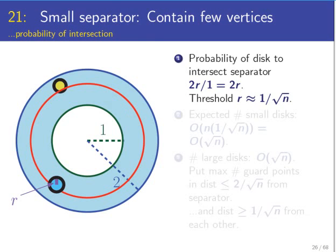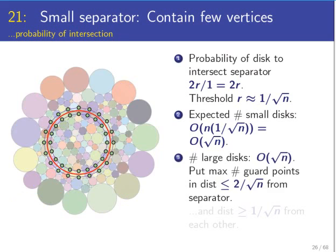That suggests a very natural thing to do. We are going to split the disks in the disk packing and the vertices in the graph into two classes: small disks and large disks. Small disks are going to have radius smaller than 1 over square root n. Big disks are going to have a radius bigger than this threshold. Now the idea is that all the small disks, each one of them has the probability 2 over square root n to be in the separator. There are n such disks, and as such, the expected number of small disks intersecting the separating ring is going to be the product of those two quantities, and that's O of square root n.